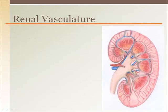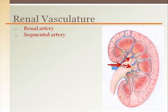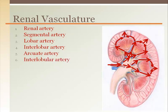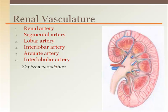The blood supply inside the kidneys begins with the renal artery, then the segmental artery, and lobar artery. The interlobar arteries run along the renal columns, going to the arcuate arteries above the medullary pyramids. The interlobular arteries are in the renal cortex, bringing blood to the millions of tiny capillary offshoots to the filtering units of the nephrons.